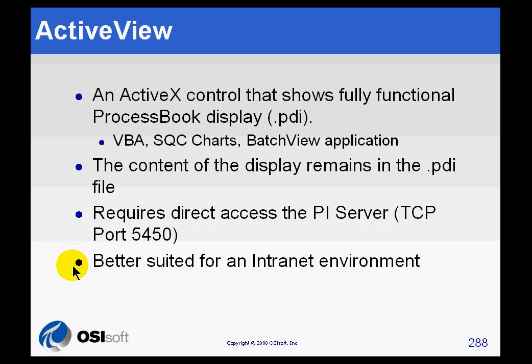To summarize: RT ActiveView is for those people who have rich displays that make use of advanced features — rich ProcessBook displays that use VBA, SQC charts, or BatchView applications that simply cannot be exported to SVG and used as the RT Graphic Web Part. Instead, we install ActiveView, the ActiveX control, on each client computer that's going to use it, and then make use of the RT ActiveView Web Part to display it within a Web Part page. We'll come back to that install in a few videos.